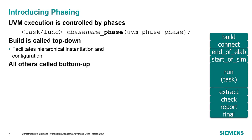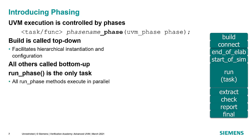After all components have completed their build phase, the phase controller moves to the connect phase, where each component's connect phase method is called. End of elaboration is called after everything is built and connected — a good place for last-minute tweaks and printing your hierarchy for debug. Start of simulation is best for opening log files. The run phase is the only task phase; this is where sequences run and transactions are generated. After run phase, UVM goes through extract, check, and report phases.